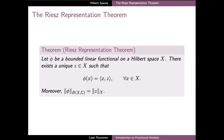As our next main result we have the Riesz representation theorem, which characterizes all bounded linear functionals on a Hilbert space. More precisely, this very important result states that if phi is a bounded linear functional on a Hilbert space X, then there exists a unique element zeta of X such that the values of phi at all points x are obtained as inner products of x with this fixed vector zeta. The element zeta also has the additional property that its norm is the same as the dual space norm of the functional phi.